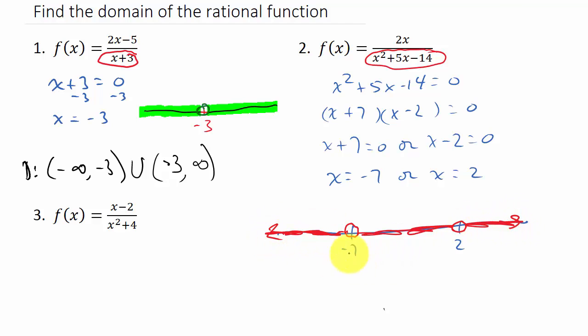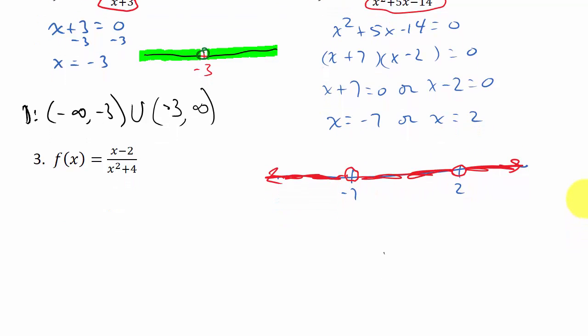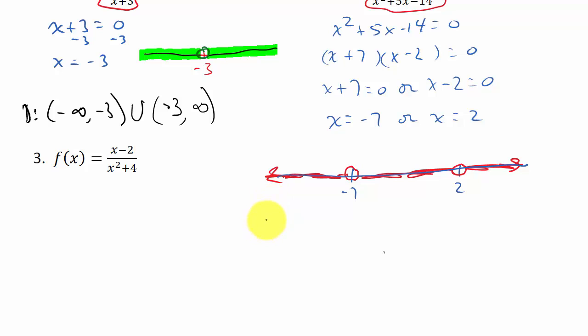So there's my domain - everything except for negative 7 or positive 2.